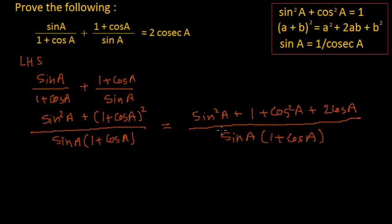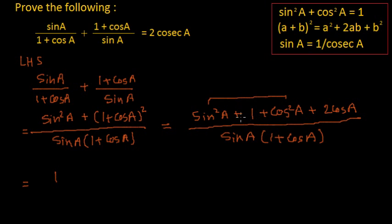We do not have anything much to solve in the denominator, but in the numerator, sine square a plus cos square a can be written as 1. So if we solve it further, we will get sine square a plus cos square a is 1, plus this 1, plus 2 cos a, divided by sine a multiplied by 1 plus cos a.